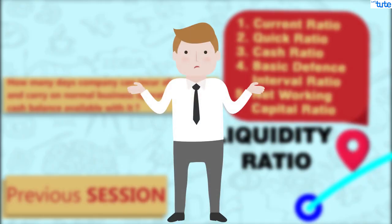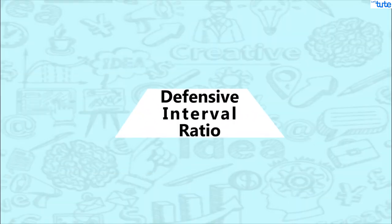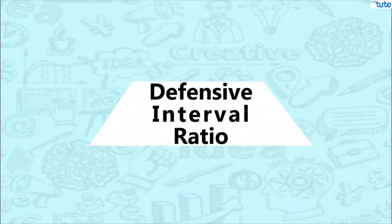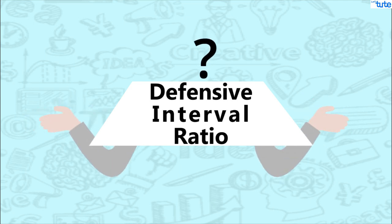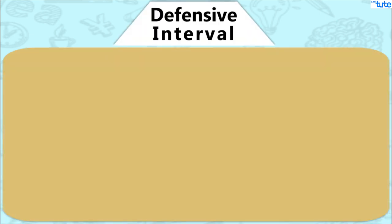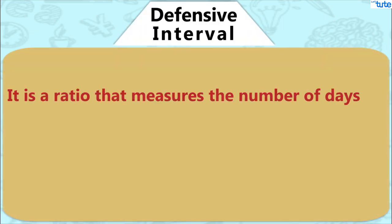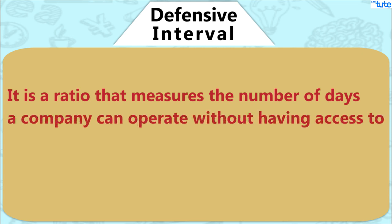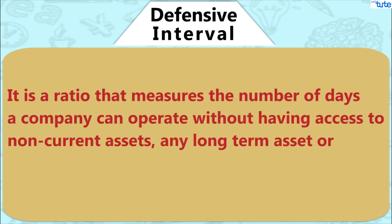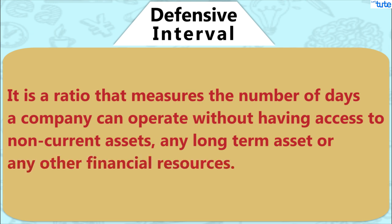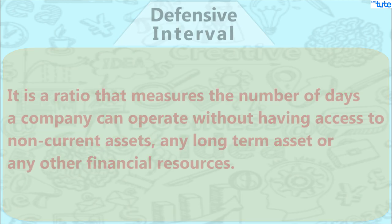This can be calculated very easily with the help of the Defensive Interval Ratio. Now you might be wondering what is Defensive Interval Ratio. Defensive Interval is a ratio that measures the number of days a company can operate without having access to non-current assets, any long-term assets, or any other financial resources.